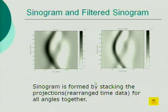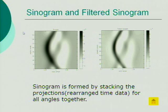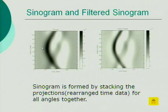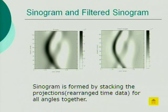The sinogram is formed by stacking the projections for all angles together. The y-axis shows different angles. If we choose 100, every point on that line represents the time of those parallel paths that make a 100 degree angle with the y-axis.